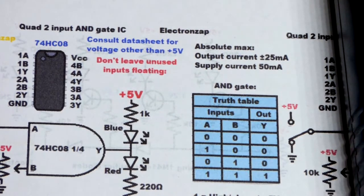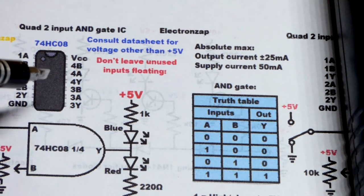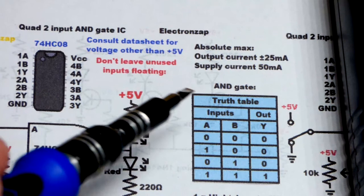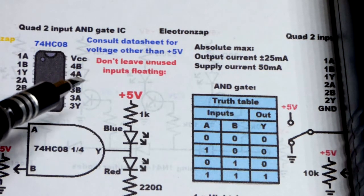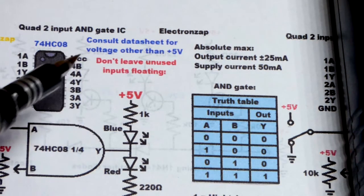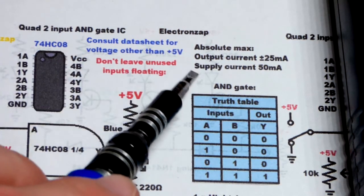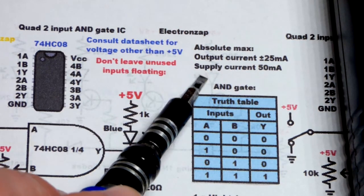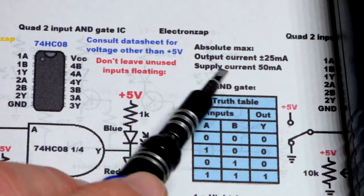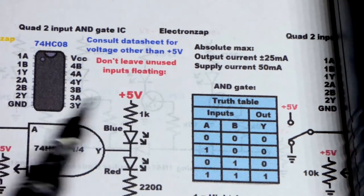Now when it comes to the power of this integrated circuit, again you always got to check the data sheet for these. Some of these integrated circuits you can't power much. You're going to need a transistor or something else to amplify the output. But these ones do pretty good, these AND gates in the 74HC series.